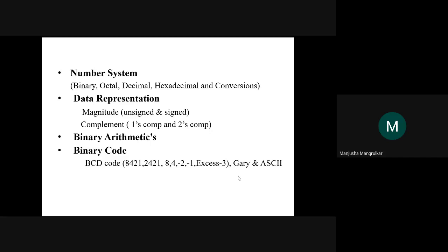In the second lecture we covered data representation, magnitudes — that is signed and unsigned — complements, one's complement and two's complement, all arithmetic operations in binary: addition, subtraction, multiplication, division, and binary codes — BCD code 8421, 2421, 84-2-1, XS3, Gray code, and ASCII code.